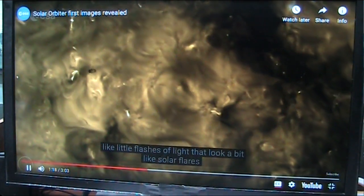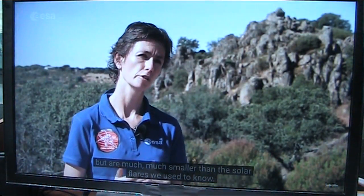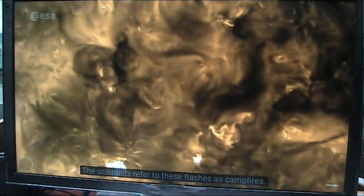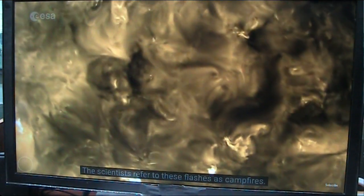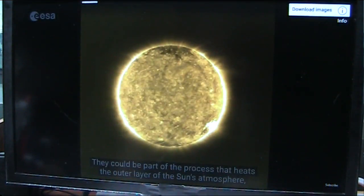Flashes of light that look a little bit like solar flares, but are much, much smaller than the solar flares we used to know. The scientists refer to these flashes as campfires. They could be part of the process that heats the outer layer of the sun's atmosphere, the corona.